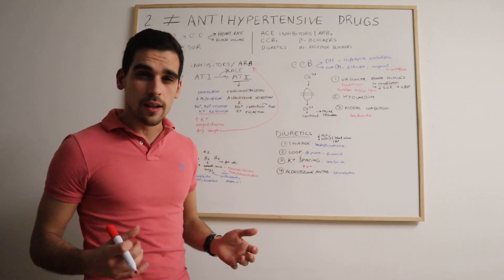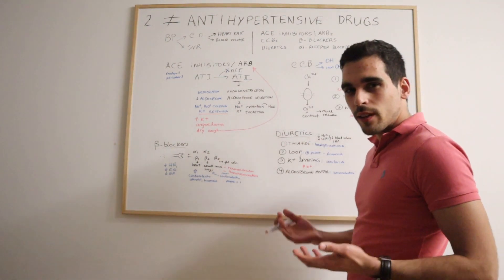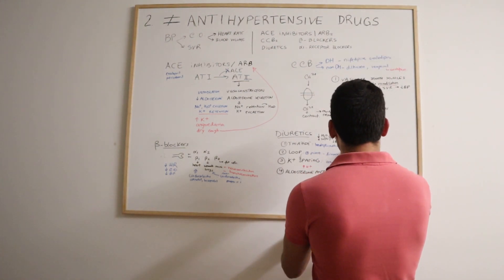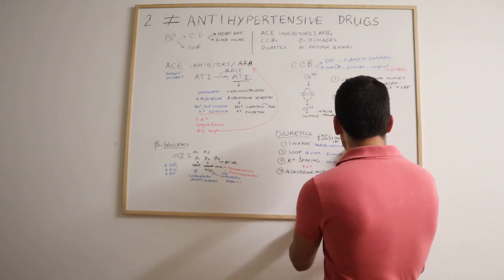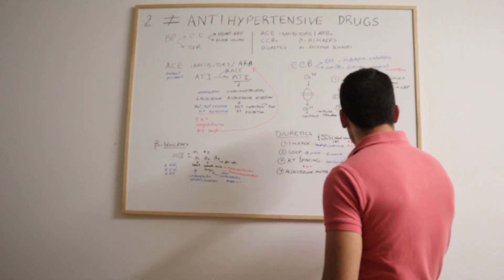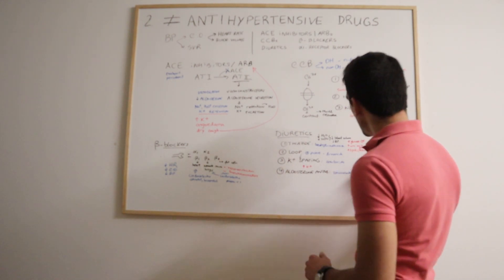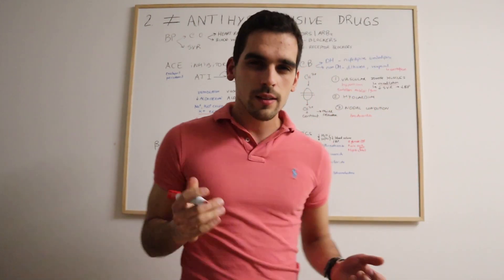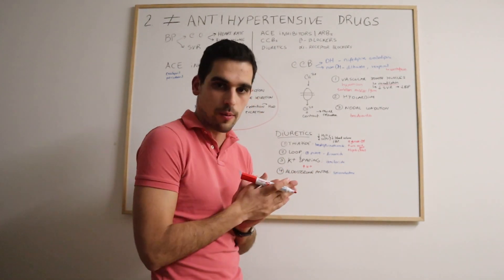When it comes to thiazides, it's really important to bear in mind that they are quite dysmetabolic. They can increase the glucose, so they are not really advisable for patients with diabetes. They can increase also the uric acid, so they should be avoided by patients with gout. And lastly, they can also increase our lipids in the blood, including the triglycerides. The thiazides have quite a few problems that should be kept in mind before prescribing them.